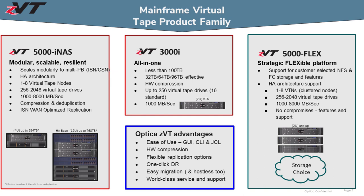The 3000 iNAS uses RAID 6 internal storage. It's a 2U solution, typically deployed with 16 virtual tape drives but capable of up to 256 drives, delivering 1,000 megabytes of performance. The 5000 Flex is where we're going to spend our time today.